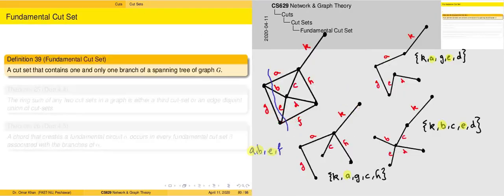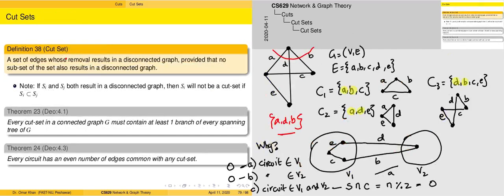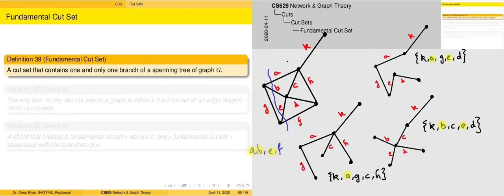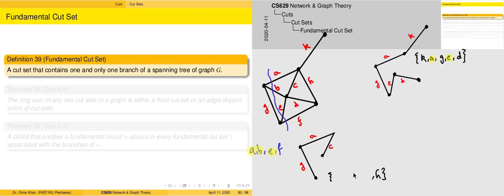Moving ahead, we come to the concept of fundamental cut set. A fundamental cut set is basically a cut set that contains one and only one branch of a spanning tree. We discussed earlier that every cut set of a connected graph G must contain at least one branch of every spanning tree of G. This is another link between spanning trees and the concept of cut sets. Let's take the case of one of these spanning trees.